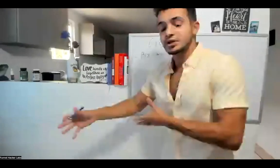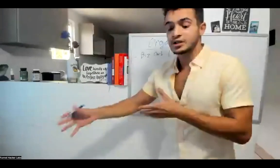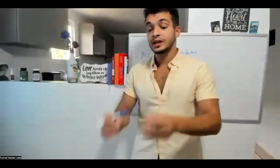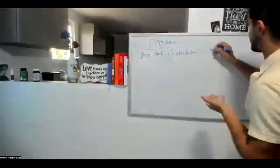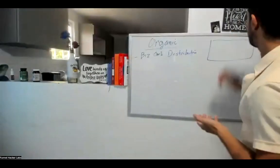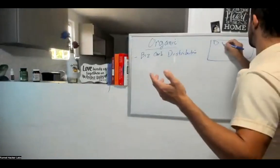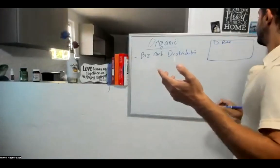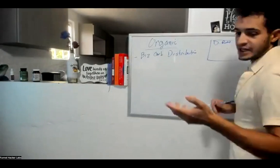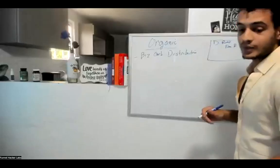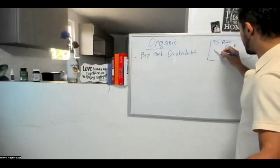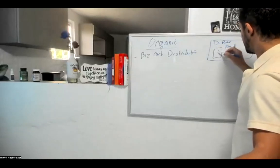Before we get into the actual distribution of business cards, let me point out a couple of key things you should definitely have on your business card. It's going to say D's Roofing. It offers free estimates — you get free estimates, right? One thing you want to do is a QR code.